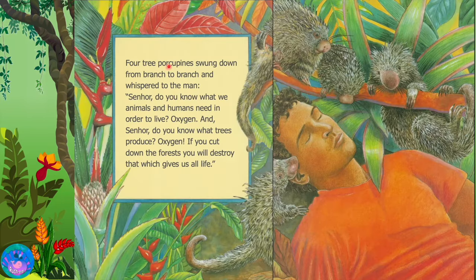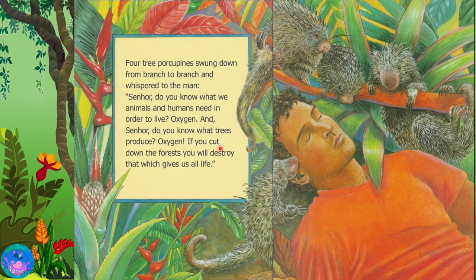Four tree porcupines swung down from branch to branch and whispered to the man: Senor, do you know what we animals and humans need in order to live? Oxygen. And Senor, do you know what trees produce? Oxygen. If you cut down the forest, you will destroy that which gives us all life.